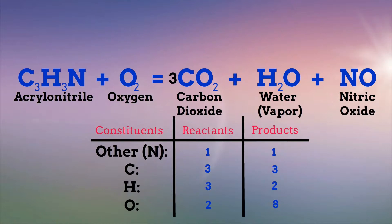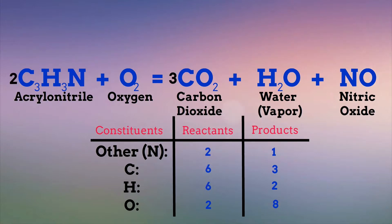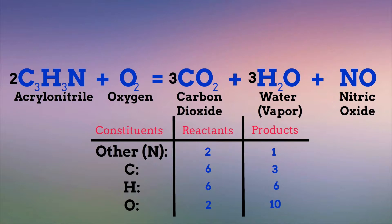Let's move to the hydrogen atoms. There are three on the left and two on the right, so we will change the coefficient of both molecules so that both sides have the least common multiple of hydrogen atoms, which is six. We'll put a coefficient of two in front of the acrylonitrile molecule and a coefficient of three in front of the water molecule. Lastly, for oxygen atoms, there are two on the left and ten on the right, so we will change the coefficient of the oxygen molecule on the left to match, which is five. So now we have ten oxygen atoms on both sides.